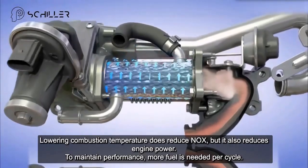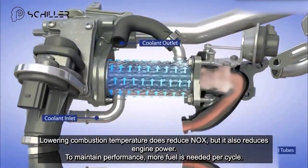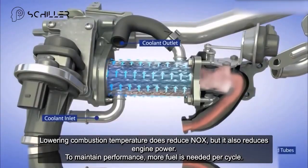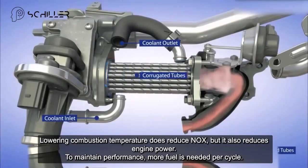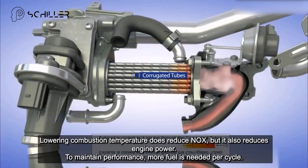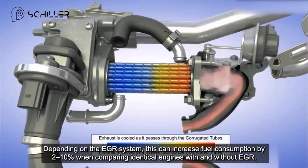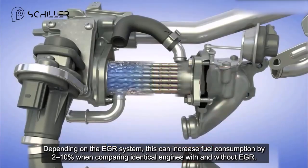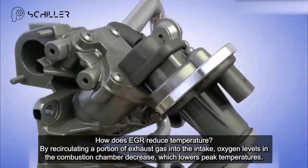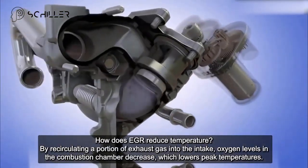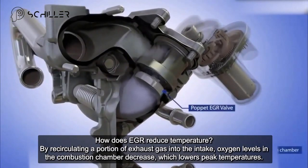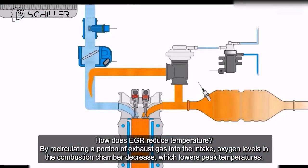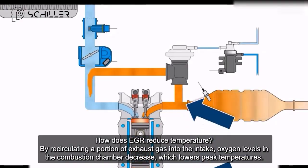Lowering combustion temperature does reduce NOx, but it also reduces engine power. To maintain performance, more fuel is needed per cycle. Depending on the EGR system, this can increase fuel consumption by 2 to 10% when comparing identical engines with and without EGR.